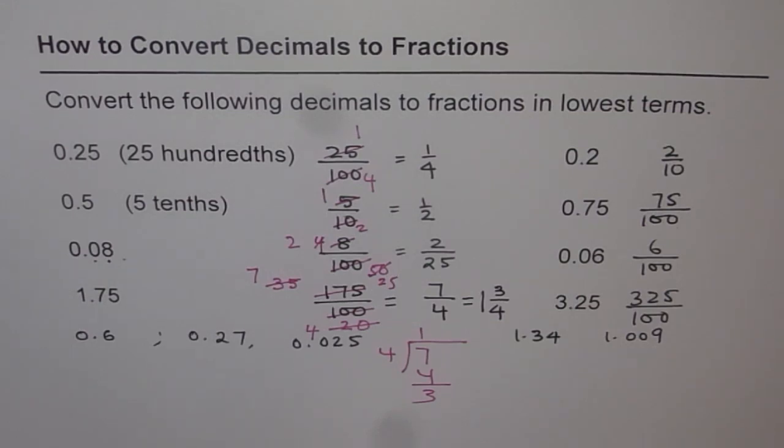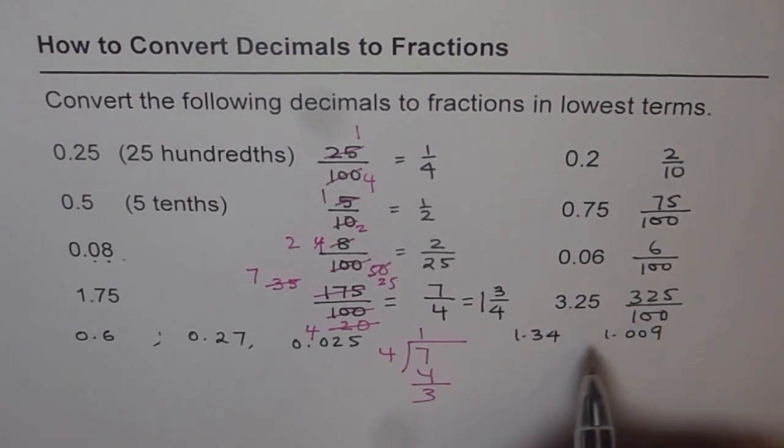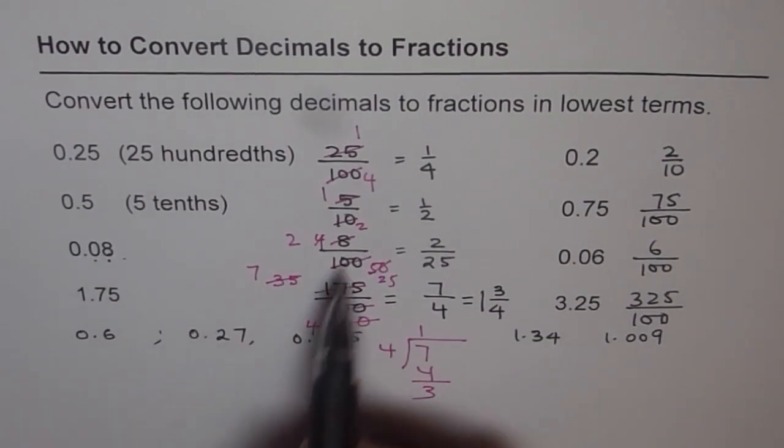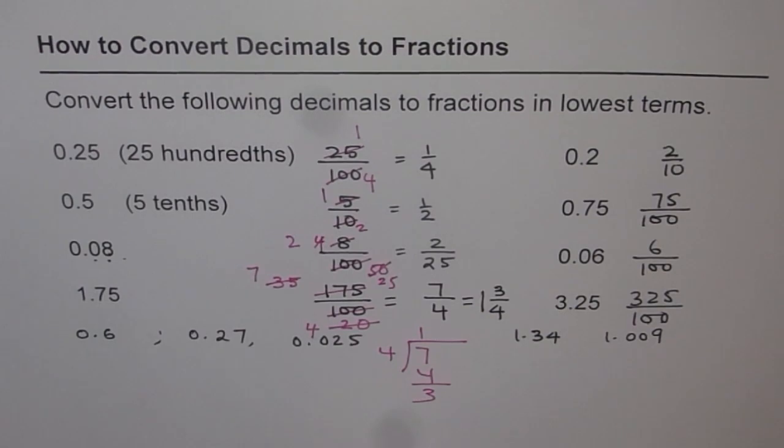Remember one thing. Read decimals as they should be read. That will give you a hint. You should divide by what. So that is first part. Second is just see how many numbers after decimal. Those many zeros. Two numbers after decimal means divide by 100. One number after decimal means divide by 10. So these are the ways you can convert decimals to fractions. Thank you.